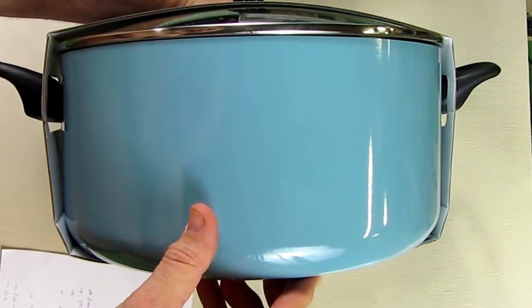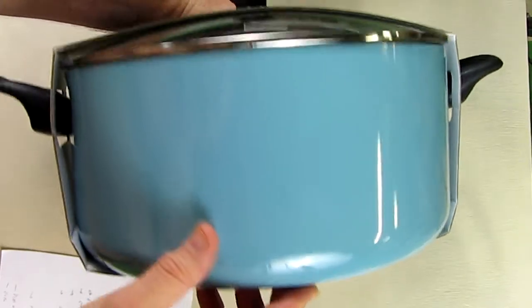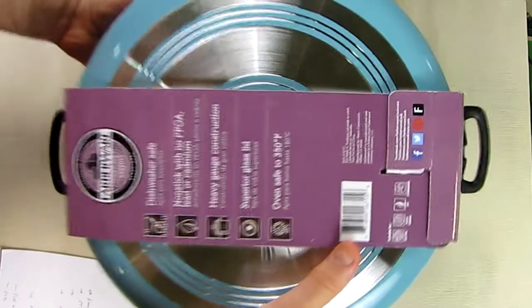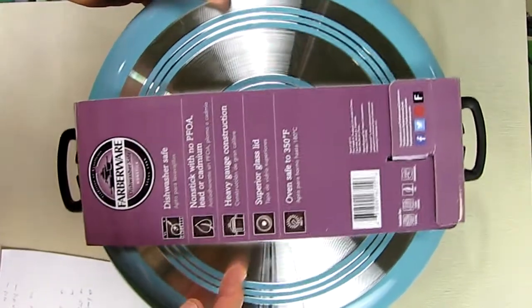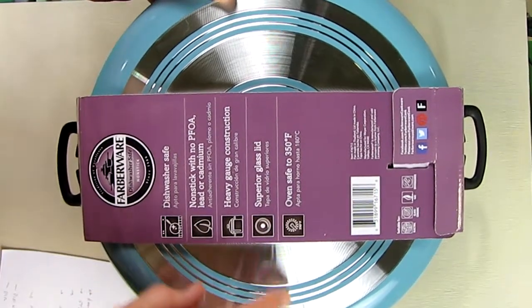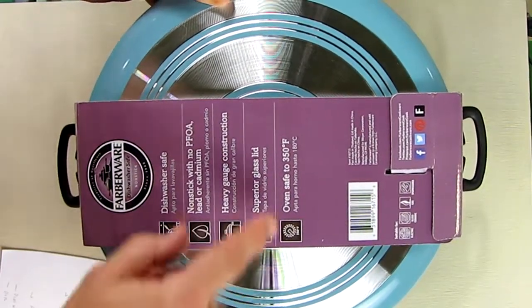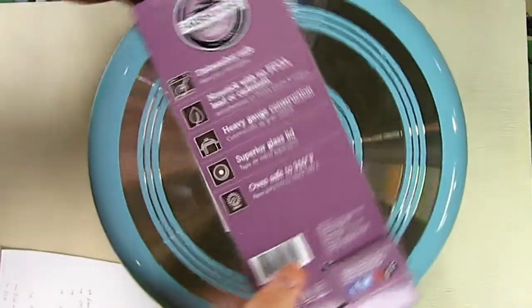It's got a colorful outer shell, this is the aqua color, very nice looking. And the bottom of it has concentric rings where they've milled the aluminum down to cause the distribution of heat to be better. And this is a dishwasher safe pan.